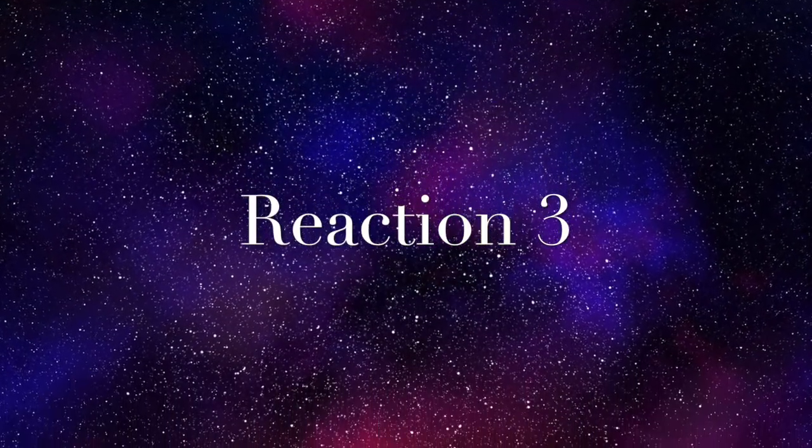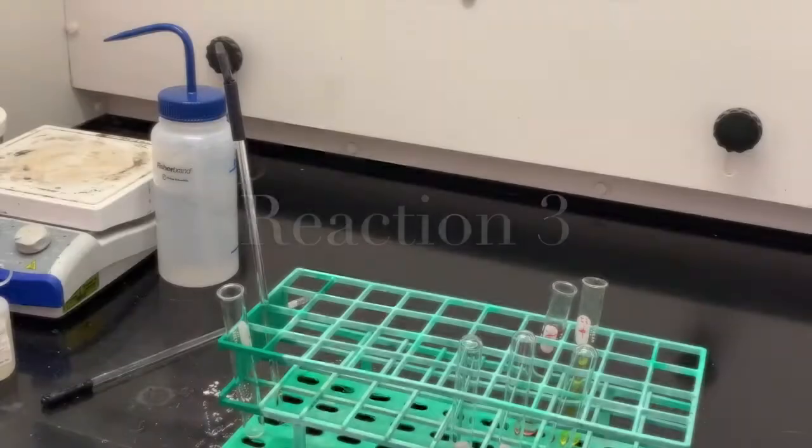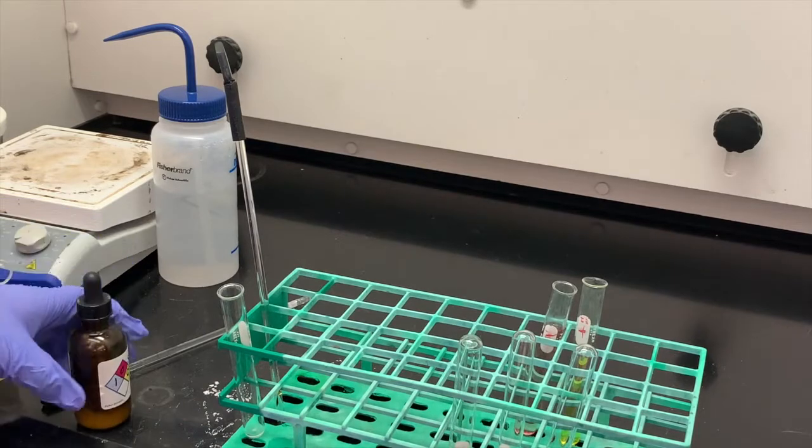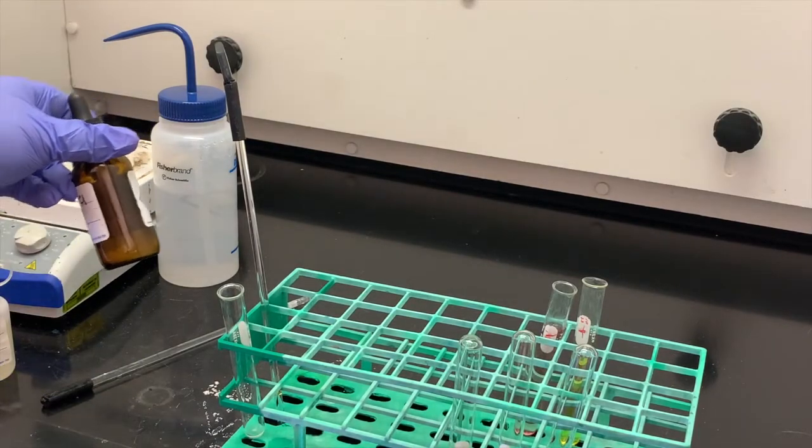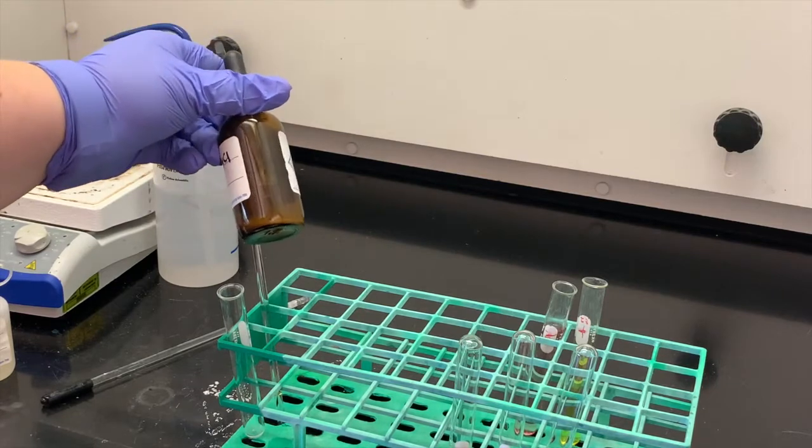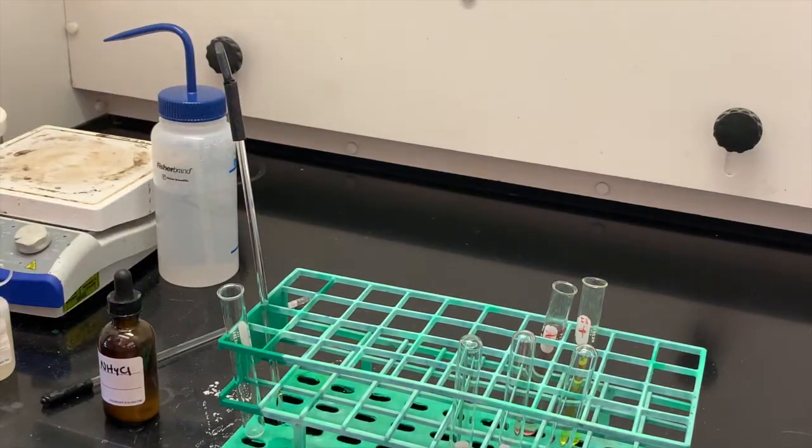Okay, so we're going to start out with a solution of saturated ammonium chloride. I have my saturated ammonium chloride in this little bottle here. At the bottom you can tell that there is some solid at the bottom, so that's how we know that it is a saturated solution. But for the reaction, we only want to get the solution part.